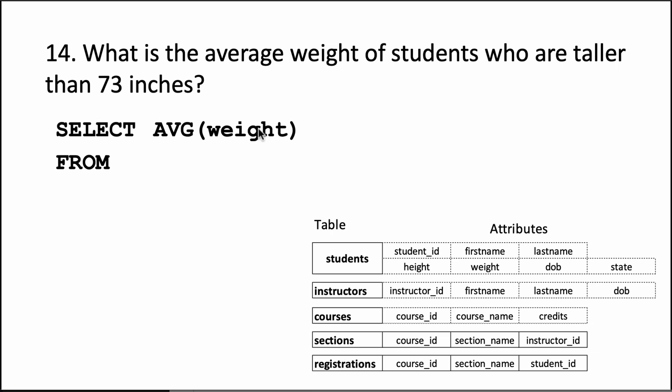Once again we say FROM students. And we can put in the condition. This time we are saying taller than 73, not at least 73. Therefore, you have to use the strict greater than sign, not greater than or equal to.